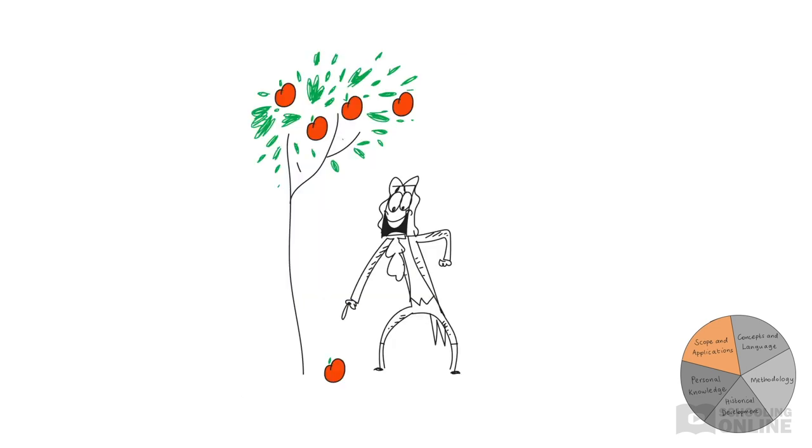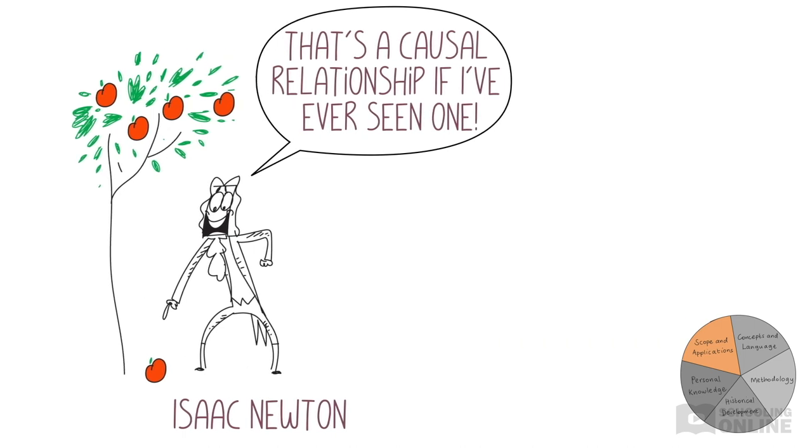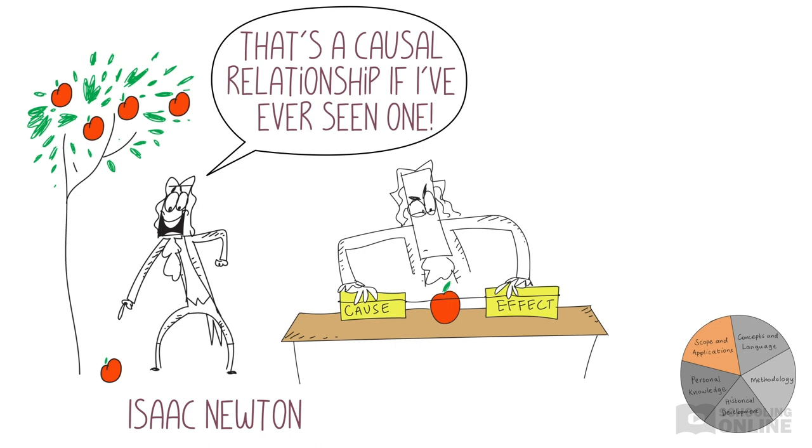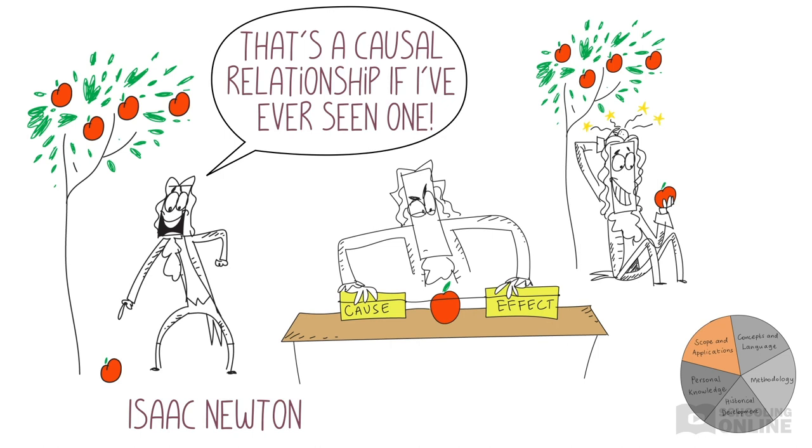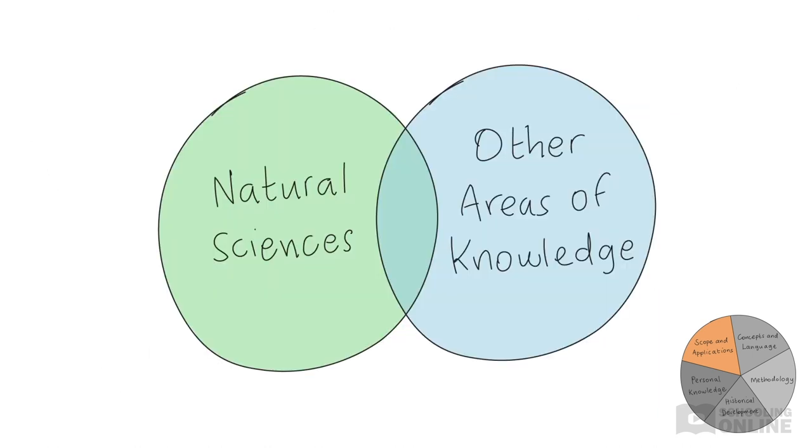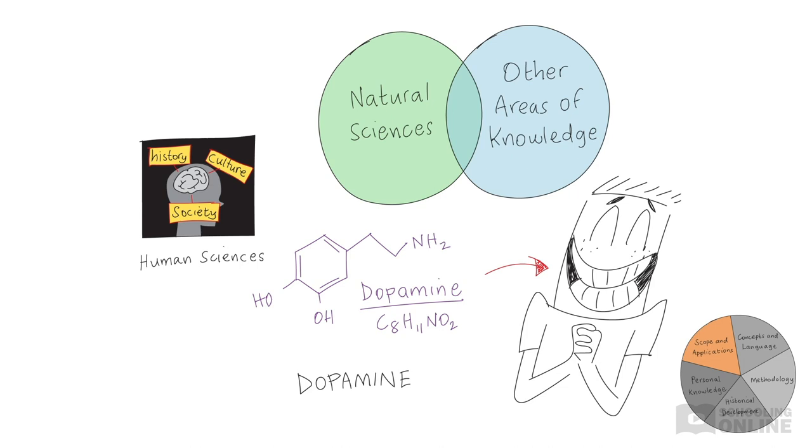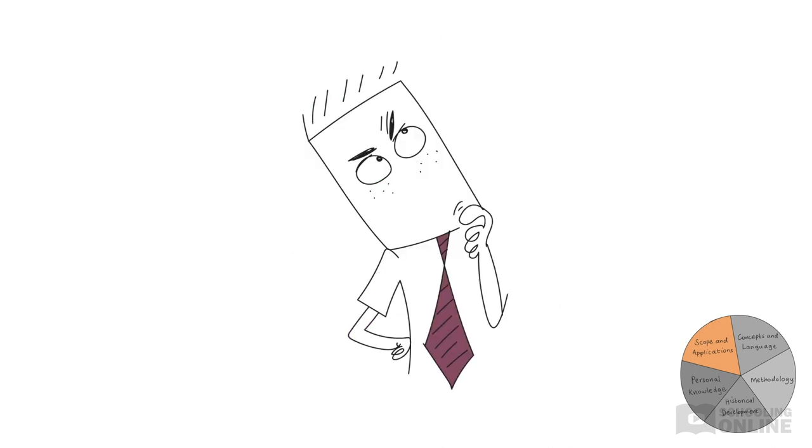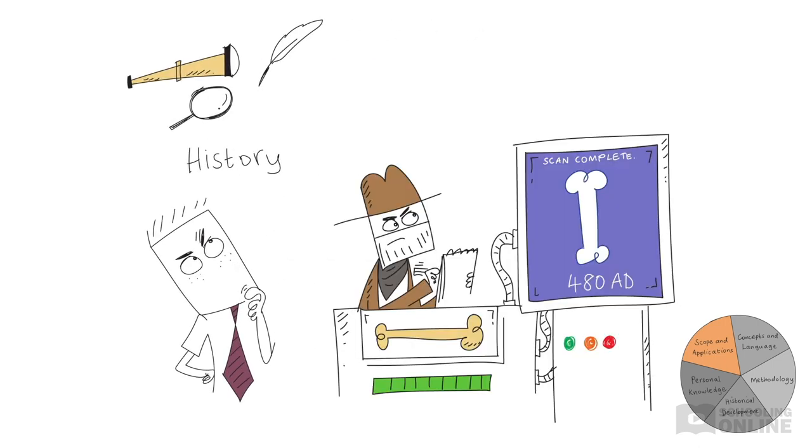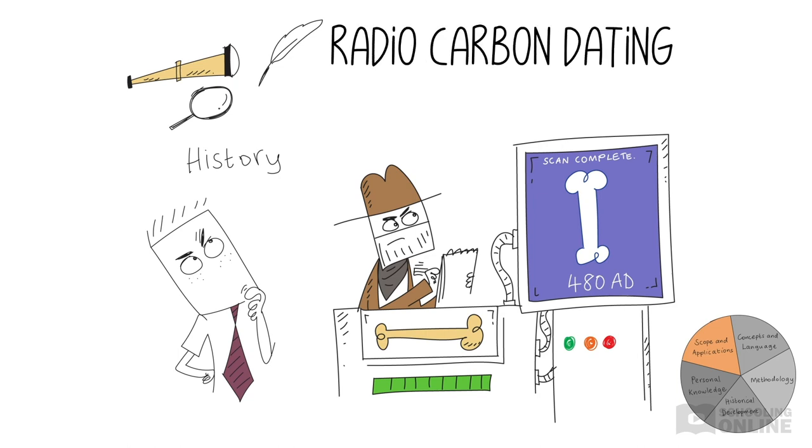You might have noticed that Newton identified a causal relationship. Many scientific laws are causal. They describe how a certain effect can be traced to a fundamental cause. If gravity, a cause, acts on a falling apple, then the apple will fall downwards as a result. The natural sciences can be applied to other areas of knowledge as well. For instance, psychologists can apply knowledge from the field of genetics to understand human behavior. You can also consider the relevance of scientific knowledge in another area, history. For example, archaeologists use radiocarbon dating to determine the age of ancient objects, which then supports the production of historical knowledge.